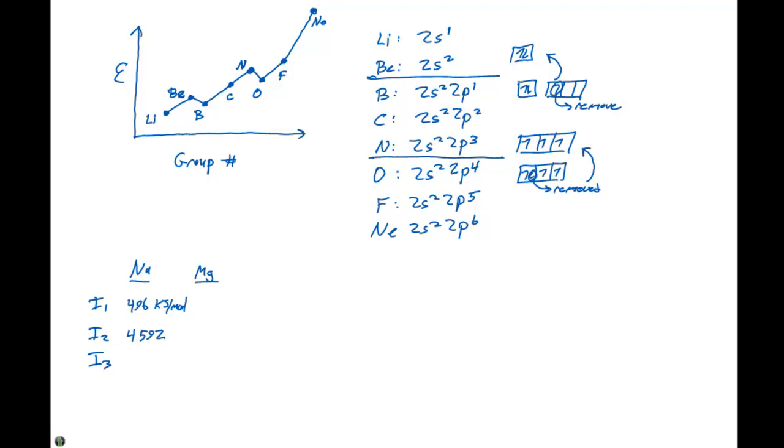Which is a drastic jump. If we look at magnesium, the first ionization energy is 738 kilojoules per mole. The second ionization energy is 1,451 kilojoules per mole. And the third ionization energy is 7,733 kilojoules per mole.